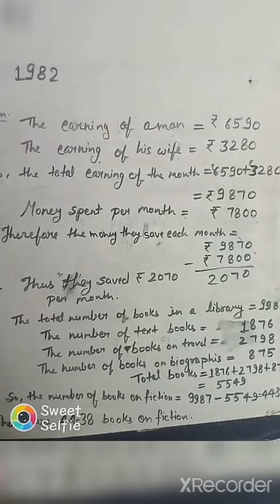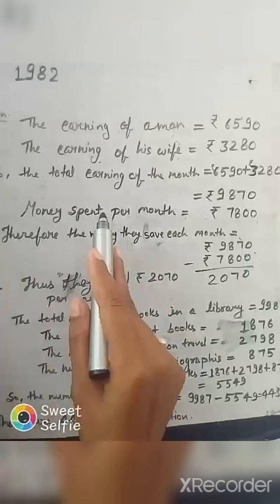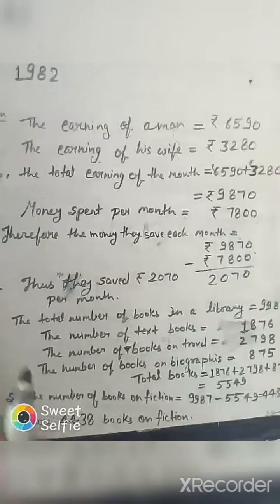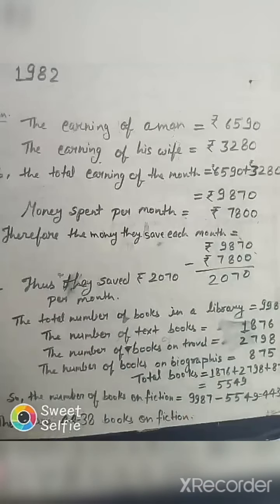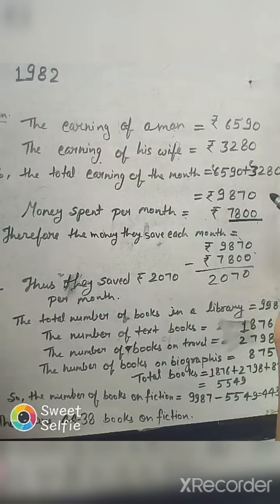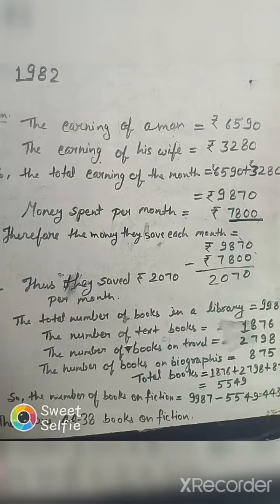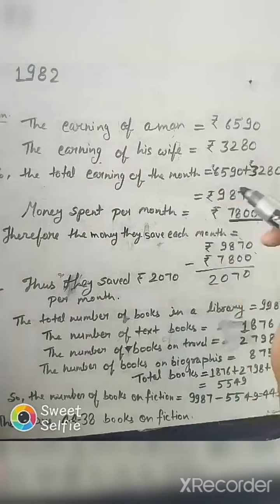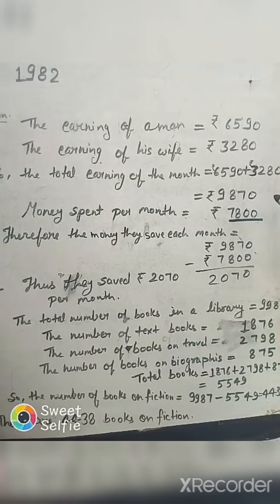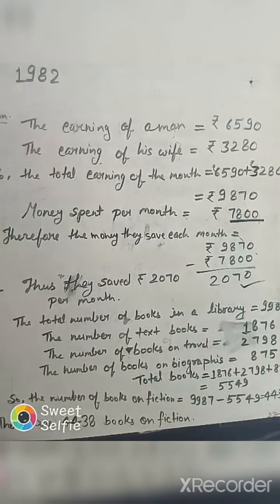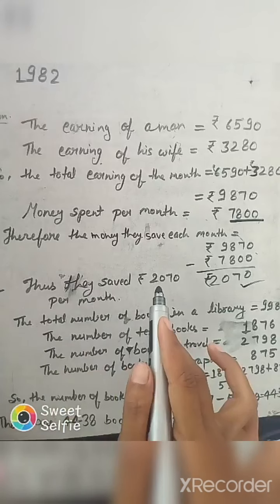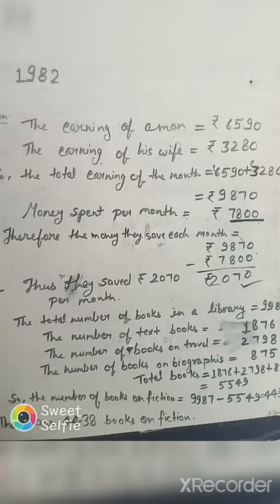Money spent per month is equal to 7800 rupees. Therefore, to find the money they save each month, we will subtract 7800 from 9870. After subtracting we get 2070 rupees. So they save rupees 2070 per month.